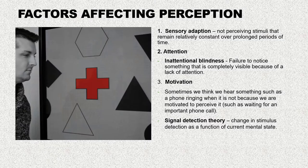Now let's look at some basics behind perception and some factors that affect it. One factor is sensory adaptation, which you just learned about — where we don't perceive stimuli that remain relatively constant over prolonged periods of time. For example, when you first enter a quiet room, you might hear the clock ticking. But over time you become unaware of the ticking. The ticking is still affecting your sensory receptors, but you're no longer perceiving the sound.